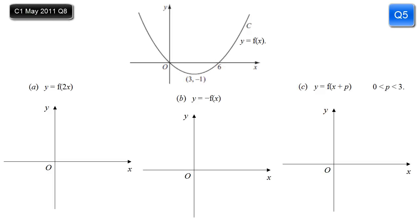We've got the graph of a curve C with equation y equals f of x. It has a minimum point at (3, −1) and we can see where it crosses the x-axis. Part A: f of 2x. When we multiply inside the brackets, replacing x with 2x, that's a stretch parallel to the x-axis with scale factor a half.